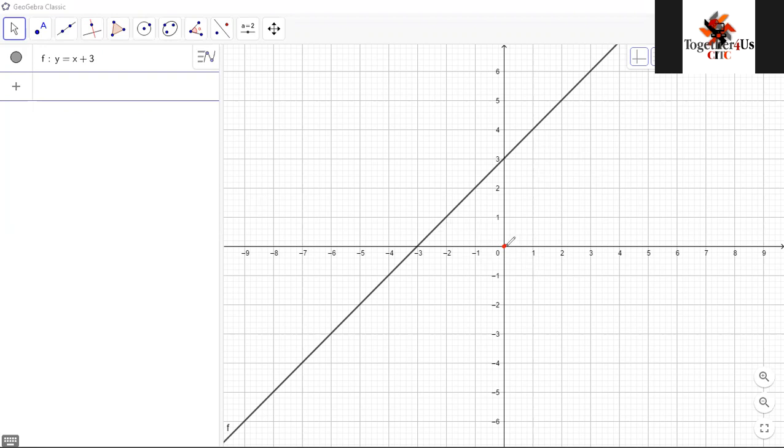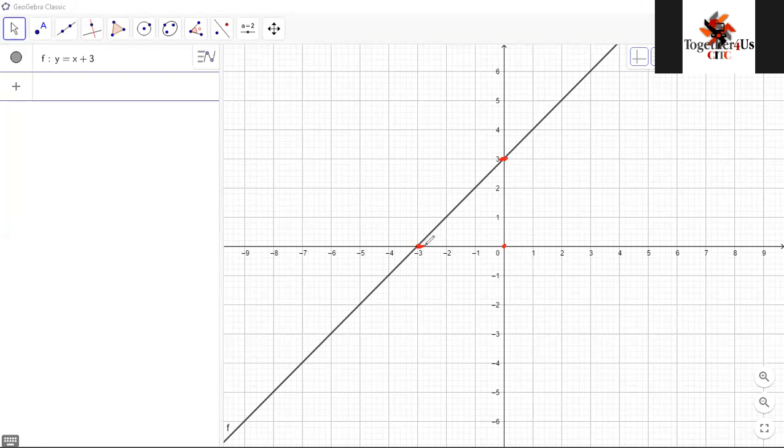What has happened is that it has moved 3 units up, which consequently has led the function to move 3 units to the left. That's what we are seeing here.